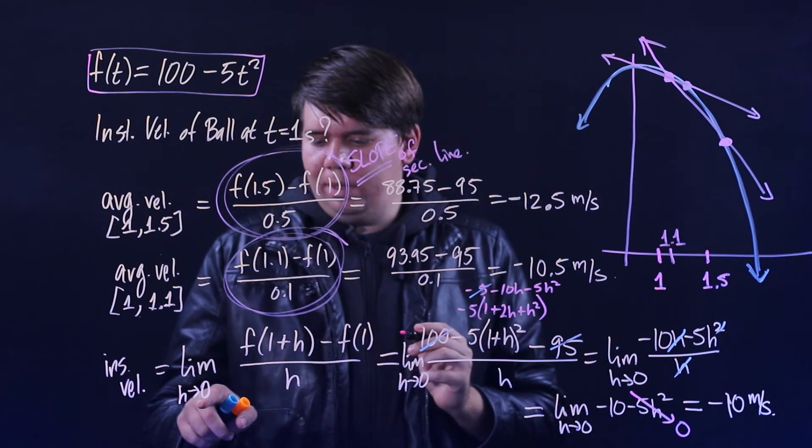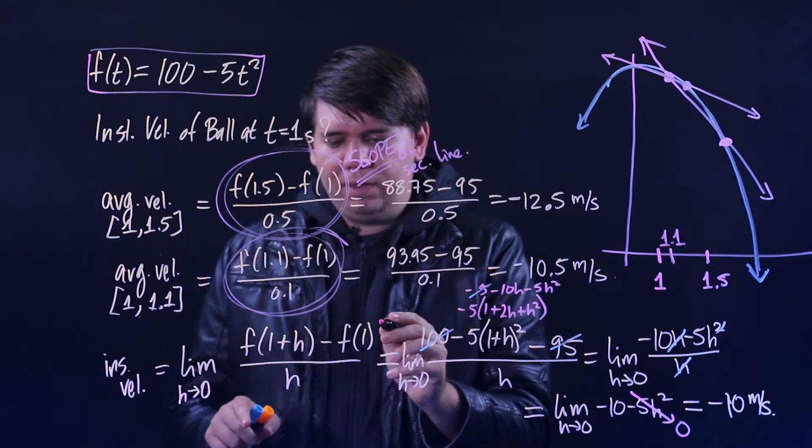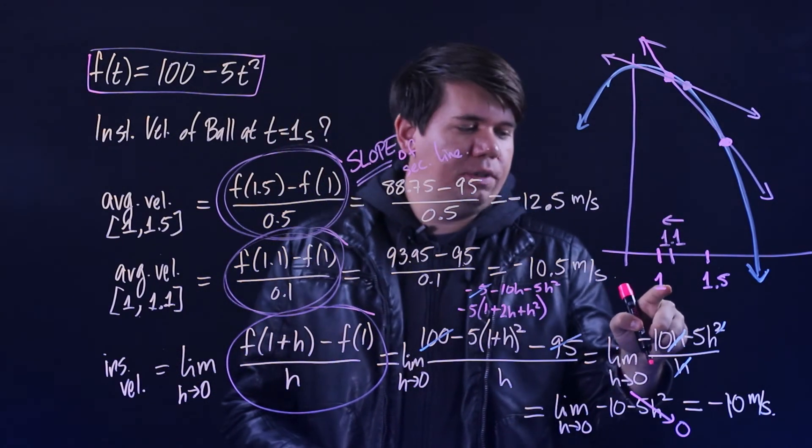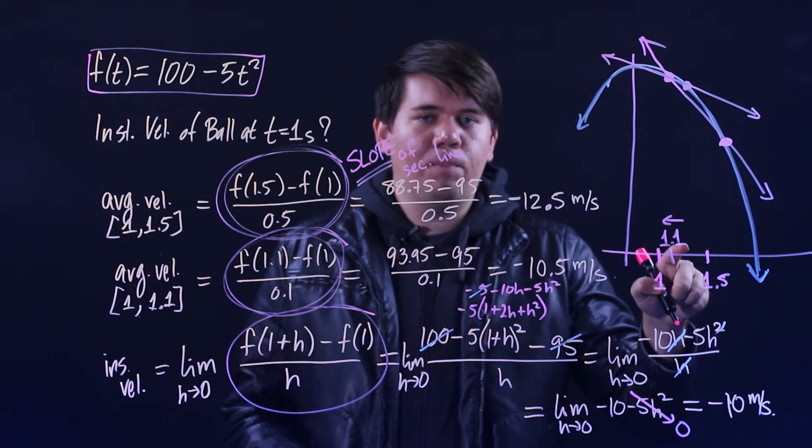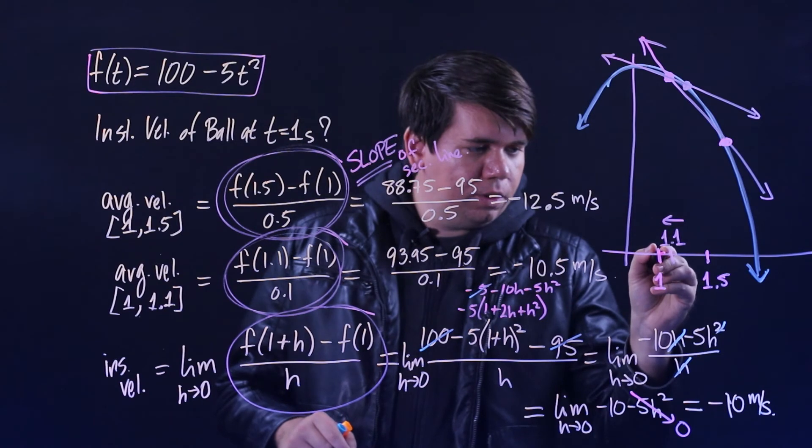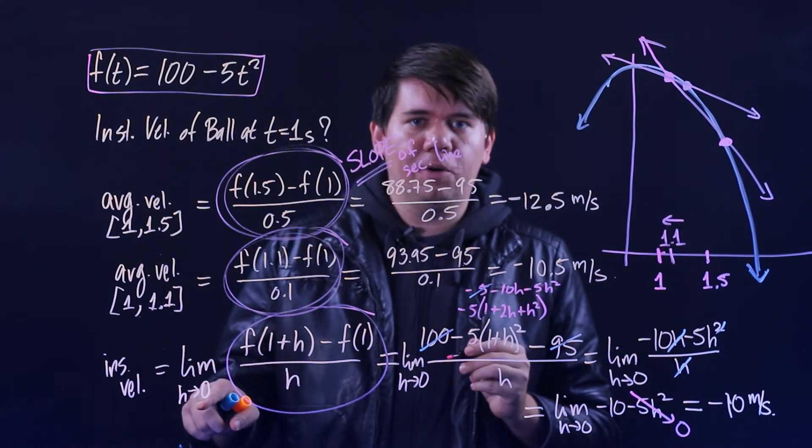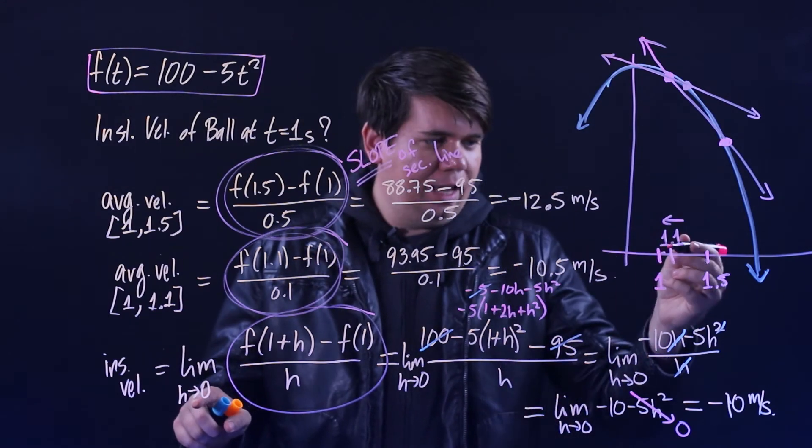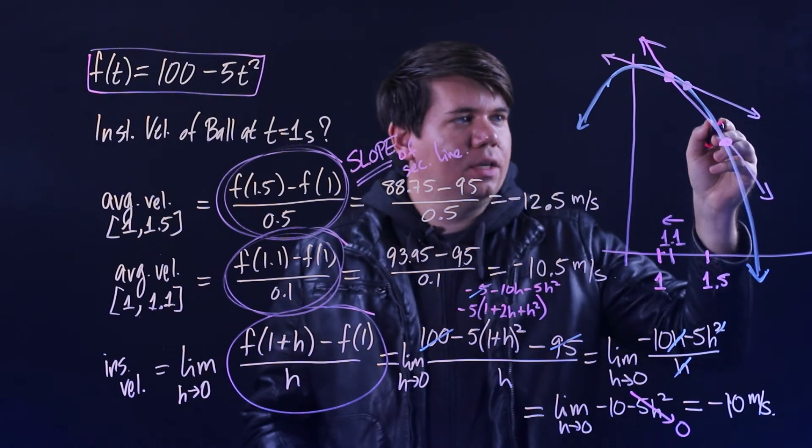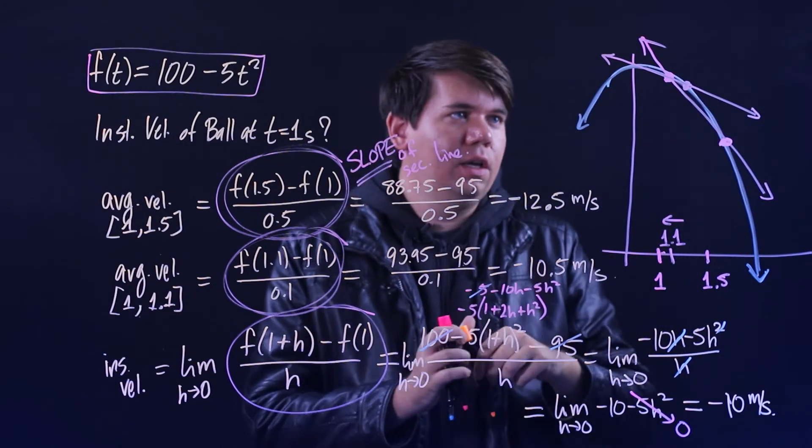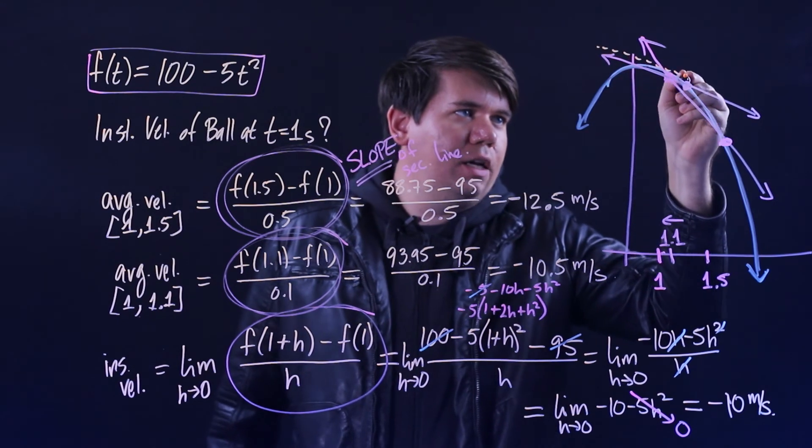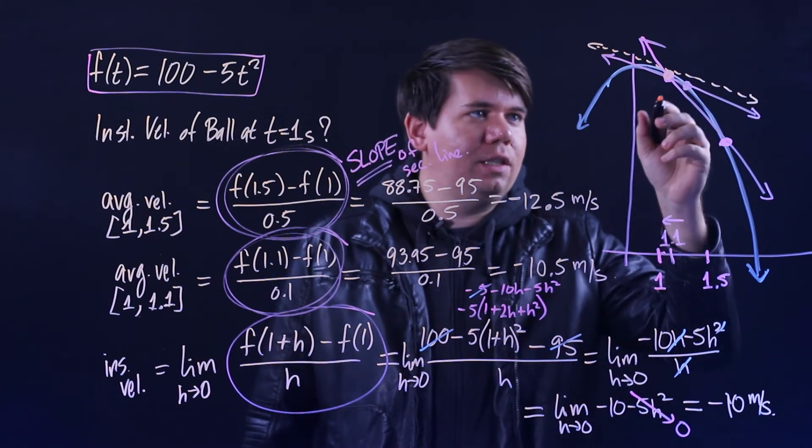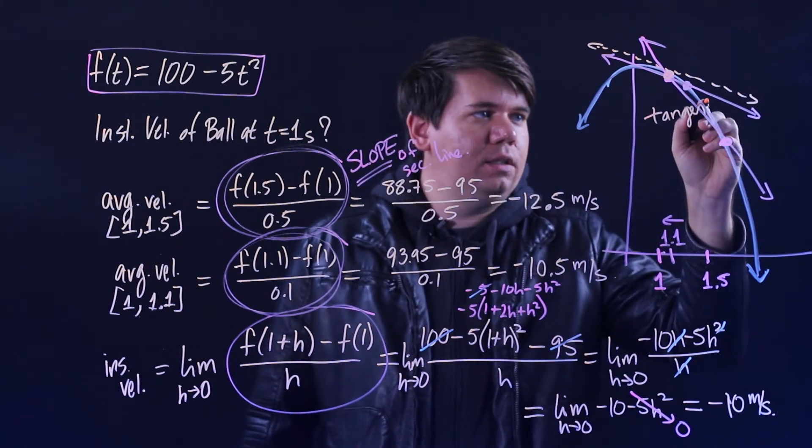Then what's going on in this limit? The limit is the slope of the line you get when you move this second point closer and closer to one. We moved it from 1.5 to 1.1 to 1.01 to closer and closer and closer as my h is going to zero. What would be the result of moving it closer and closer and letting that h go to zero? As the second point moves closer and closer to the first point, you end up with lines that approach this special line that just touches in at this one point. We call this the tangent line.